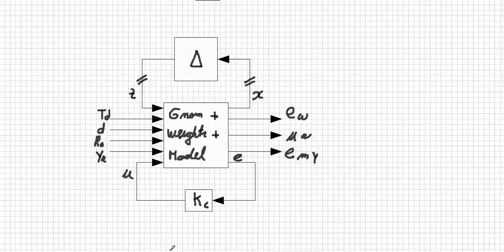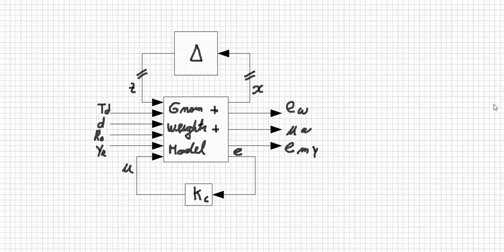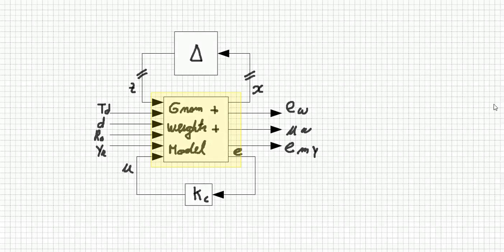We have here a simplification of the previous block diagram. Notice the block in the middle. In this block, we have amalgamated the nominal plant, the weights, and the model. The inputs are on the left, all of them, and the outputs, three of them are on the right. Remember that the outputs are the signals that we want to affect in a positive way with the design of the controller KC. Specifically, we want them to behave as indicated by the weights, the inverse of the weights, that is.